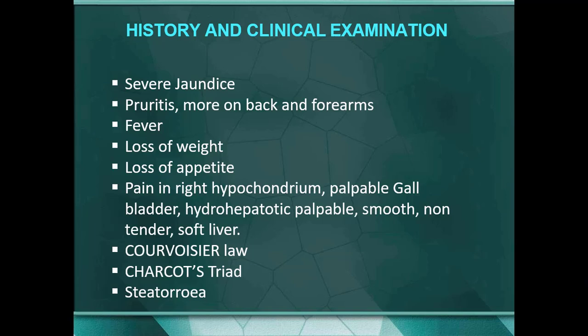When you see the patient you have to take a history and perform clinical examination. The patient will give a typical history of severe jaundice, pruritus — itching all over the body, more on the back and forearm as these are the exposed parts — fever because of cholangitis, loss of weight due to malignant causes, loss of appetite due to bile in the blood, and pain in the right hypochondrium. On examination there may be a palpable gallbladder, palpable liver that is smooth, non-tender, and soft.